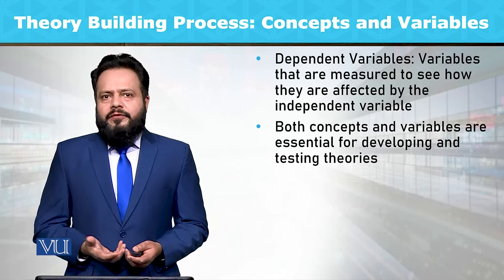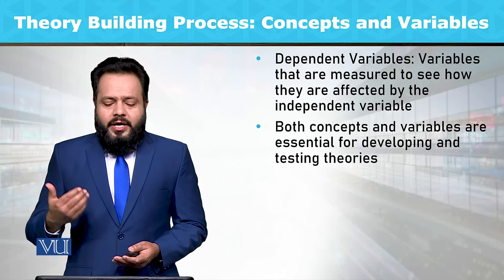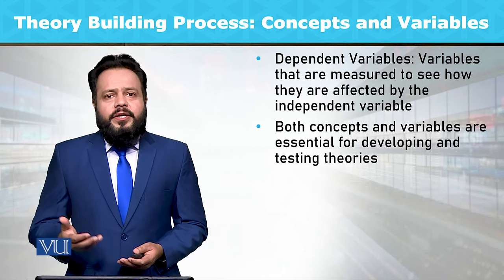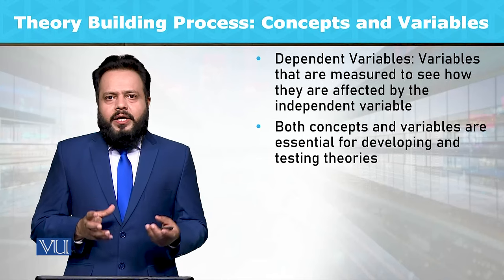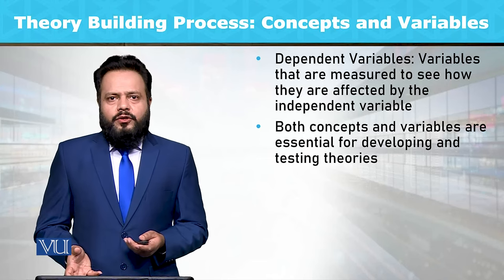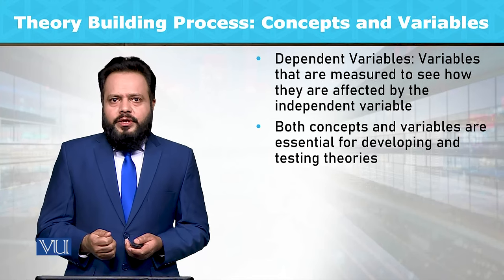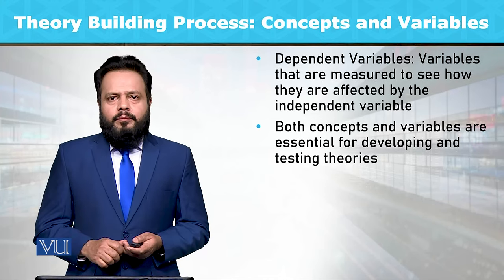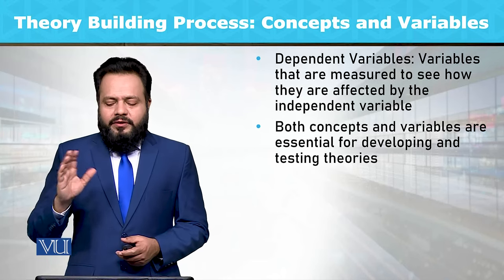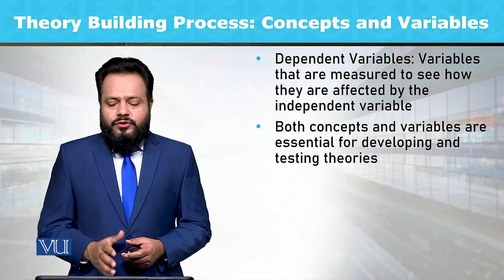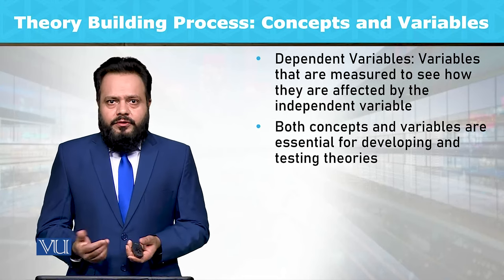Isi tarah se dependent variable hai — variables that are measured to see how they are affected by the independent variable. Jaise hum ne misal li ke happiness ka effect educational attainment ke upar kya ho sakta hai, to yahan pe educational attainment jo hai woh ek dependent variable ke tor pe hogi, jis ke upar happiness ka effect dekha ja raha hai. So both concepts and variables are essential for developing and testing theories.